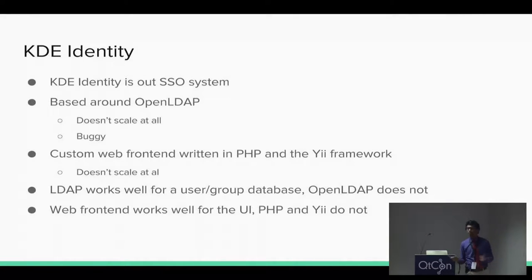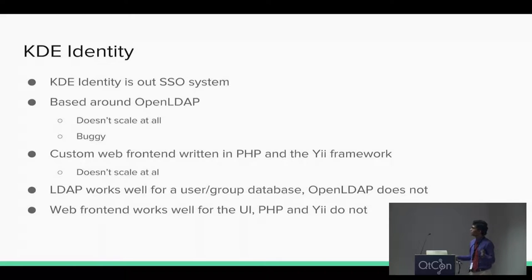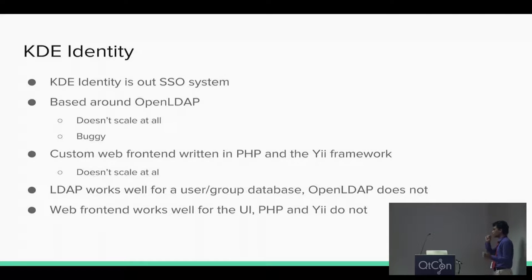KDE Identity is our single sign-on system — create a KDE Identity account and you have access to all apps: Fabricator, ReviewBoard, Kanboard, Notes, etc. It's based around OpenLDAP, which doesn't scale at all and is incredibly buggy. It has a custom web front-end called Solina, written by Ben in PHP and the Zend framework, which also doesn't scale. LDAP as a protocol works well for a user and group database, but OpenLDAP as software does not. The tools we use to build it are aging and we'll have to replace them at some point.